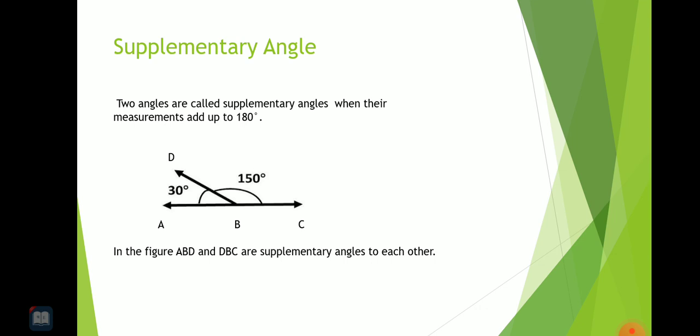Two angles are called supplementary angles when their measurements add up to 180 degrees. Here you can see that ABD and DBC. One measurement is 30 degrees and another is 150 degrees.